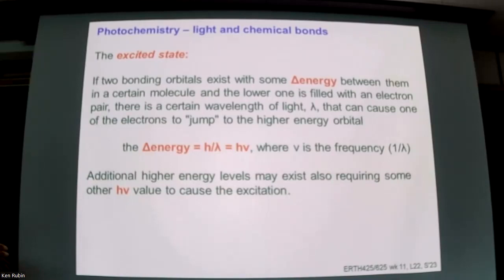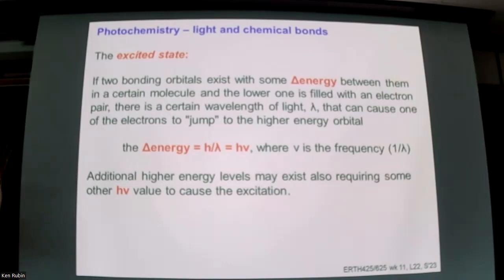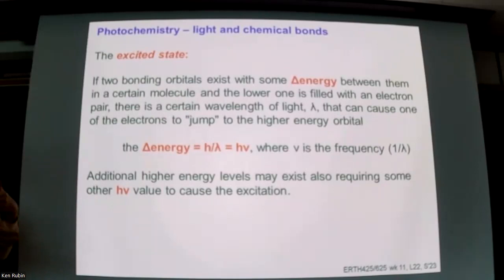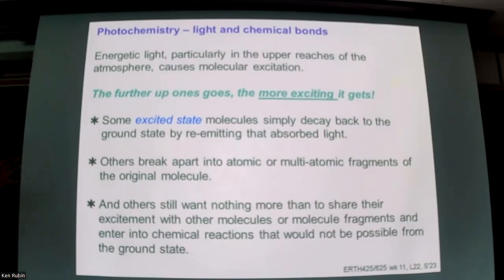Different molecules are promoted to different excited states by specific quanta of energy — hν = h/λ, where λ is the wavelength of light. For chemicals with short half-lives, they can react with less energetic light closer to the surface — those involved in photochemical smog. Others take more energy and therefore happen higher up in the atmosphere, like the breaking apart of chlorofluorocarbons leading to ozone layer thinning. Each molecule has its own specific frequency at which it absorbs light.